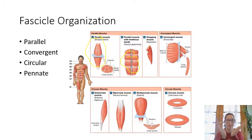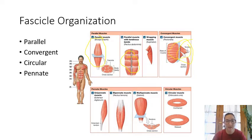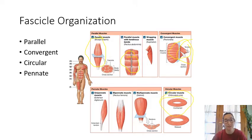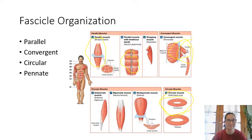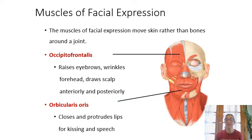Some muscles have a convergent fascicle organization — they start out wide and narrow down to a point. The pectoralis starts wide and flares out, while the tendon is a narrow point. There are also circular muscles, like those around the eye and the lips, which form complete circles. Pennate muscles look like a feather — if the fascicles look like a feather, it's a pennate fascicle organization.